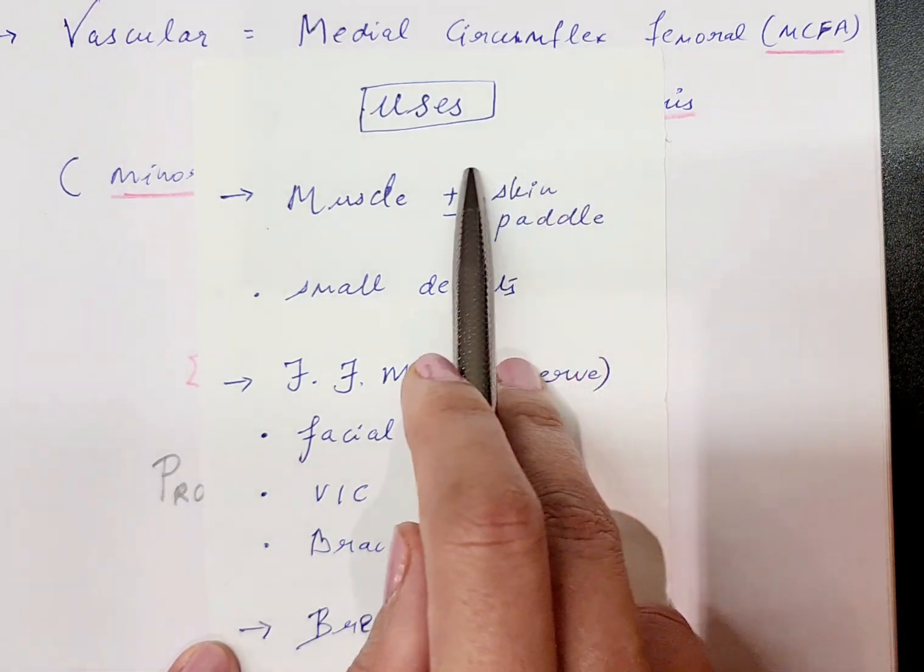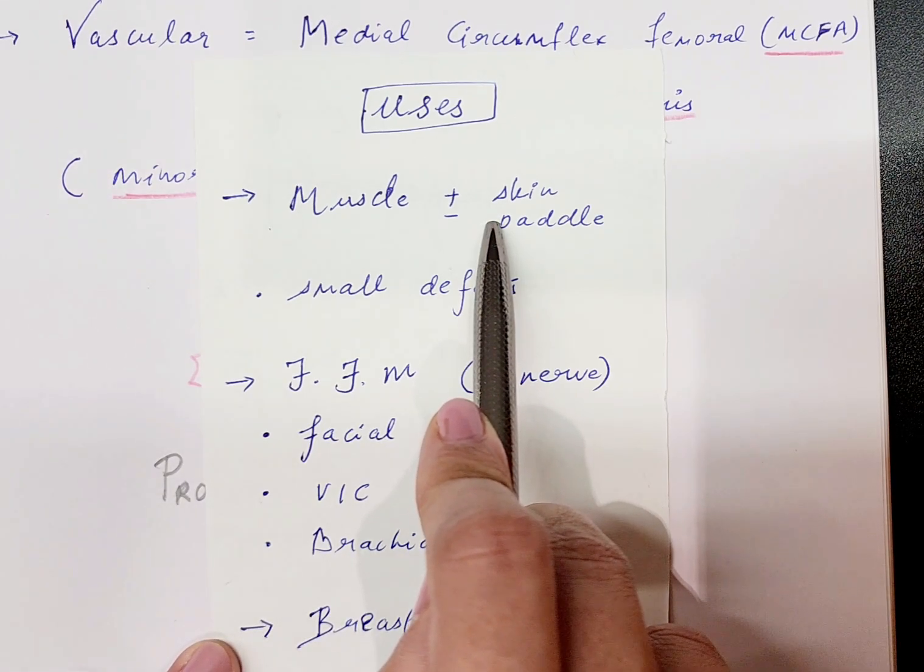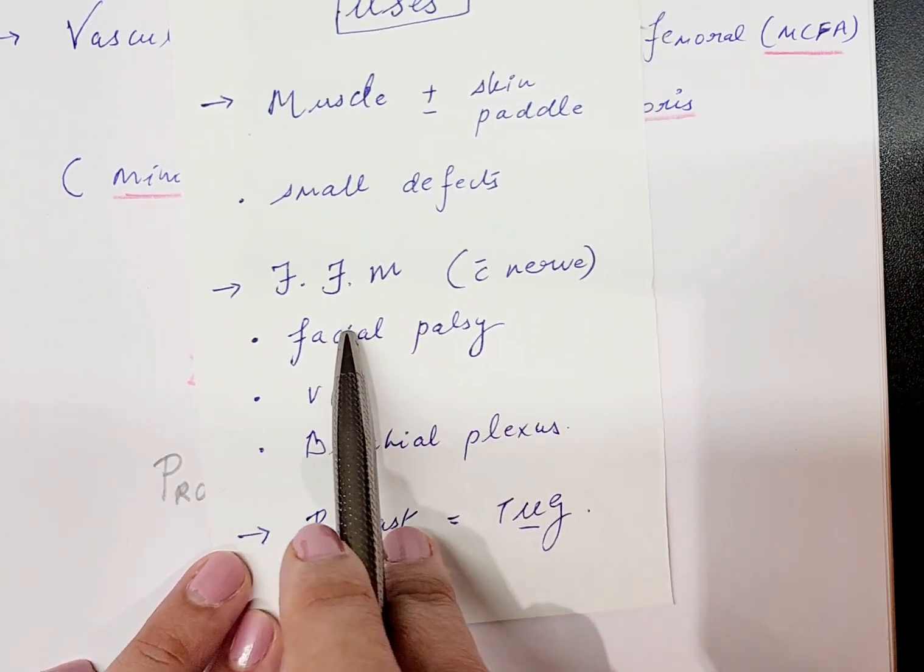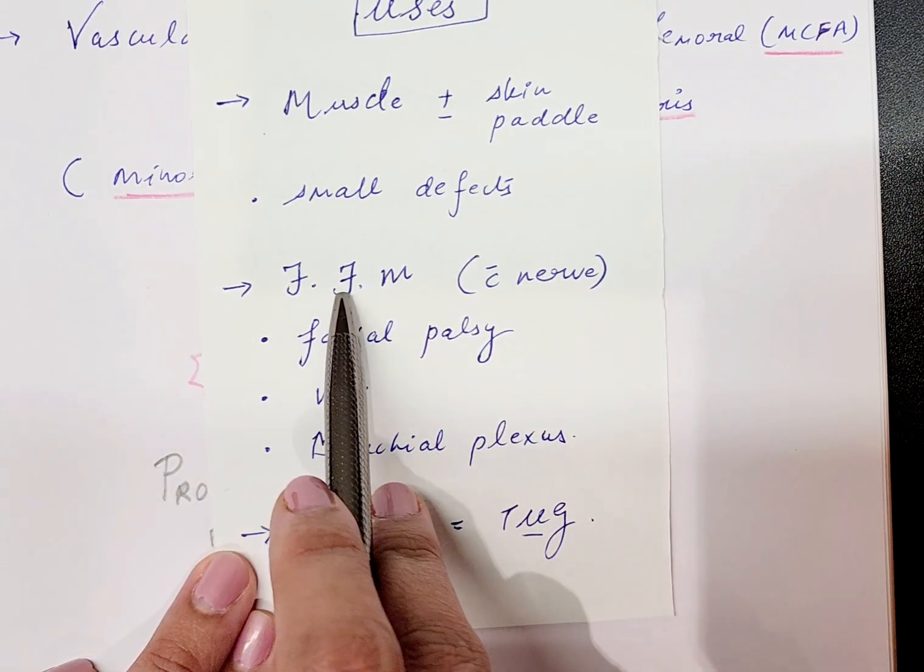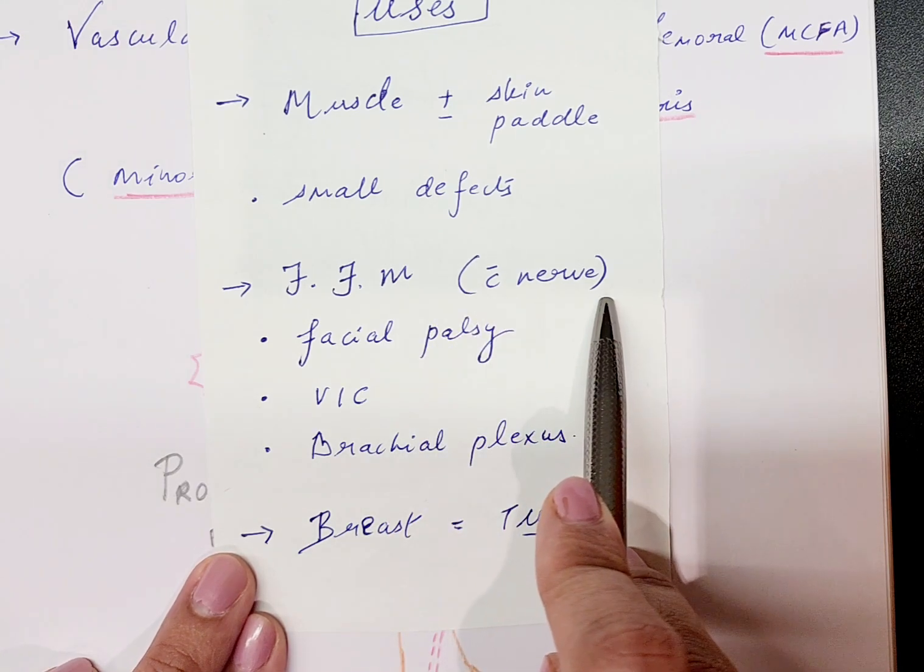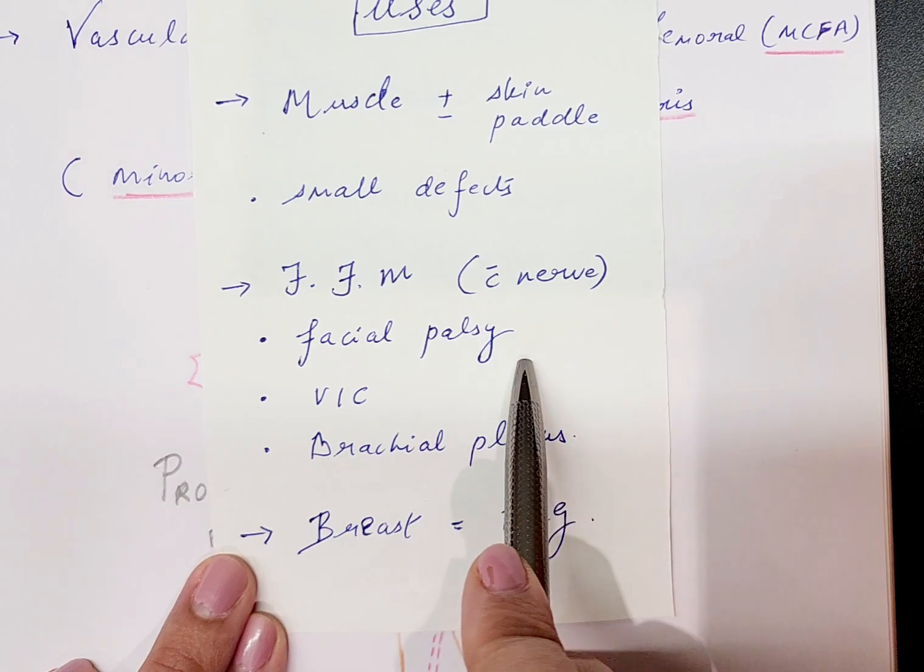Why is the skin paddle a little precarious? We will discuss when we discuss the harvest of the gracilis flap. The important point to note is that this is very widely used as a free functional muscle flap because of the innervation and the long length of the nerve that comes along with this muscle.